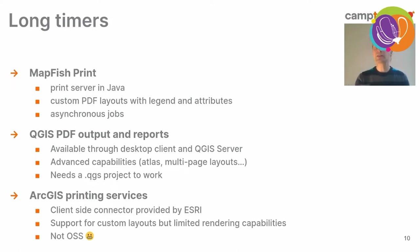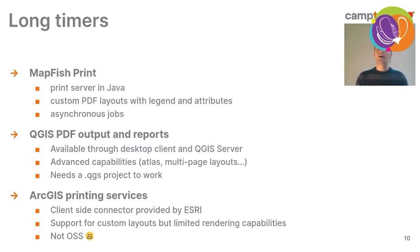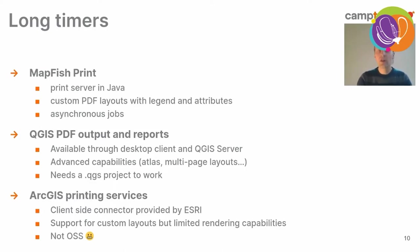QGIS also has a strong PDF output and reports functionality available in QGIS Server, making QGIS a powerful print service accessible through the web. You can do Atlas and multi-page layouts — it's very rich. But it needs a QGIS project file to work on. The last option is ArcGIS printing services. In the ArcGIS suite you have pretty powerful printing services, and what's interesting is that you have a client-side JavaScript connector. It supports custom layouts and has limited rendering capabilities, but it's not open source.